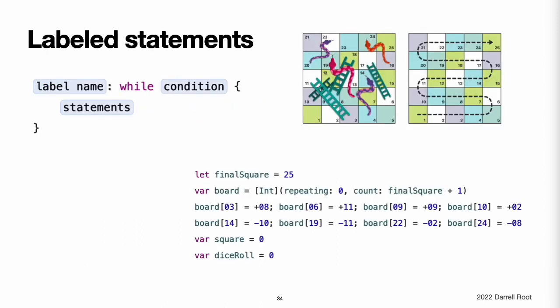Labeled Statements. In Swift, you can nest loops and conditional statements inside other loops and conditional statements to create complex control flow structures. However, loops and conditional statements can both use the break statement to end their execution prematurely. Therefore, it is sometimes useful to be explicit about which loop or conditional statement you want a break statement to terminate. Similarly, if you have multiple nested loops, it can be useful to be explicit about which loop the continue statement should affect. You can mark a loop statement or a conditional statement with a statement label, and use that label with the break or continue statement to end or continue the execution of the labeled statement.